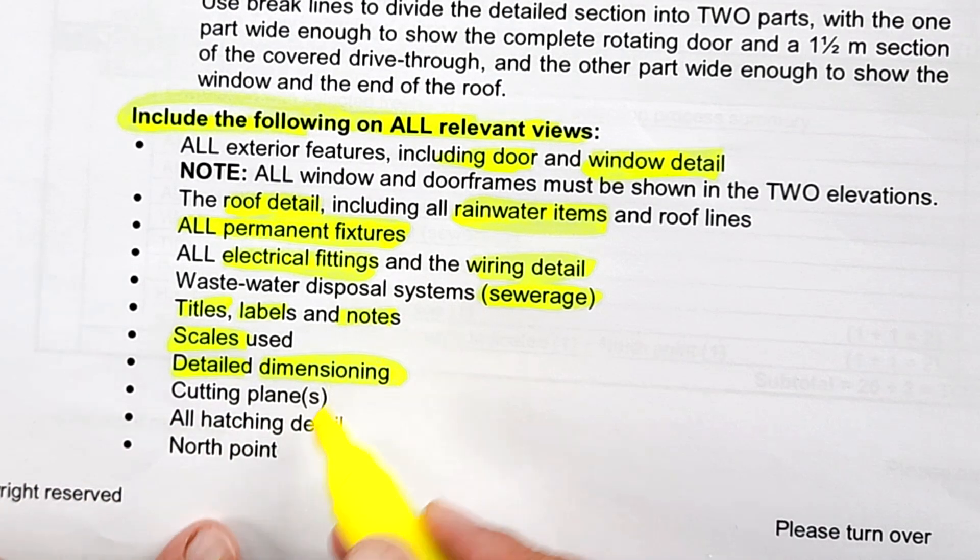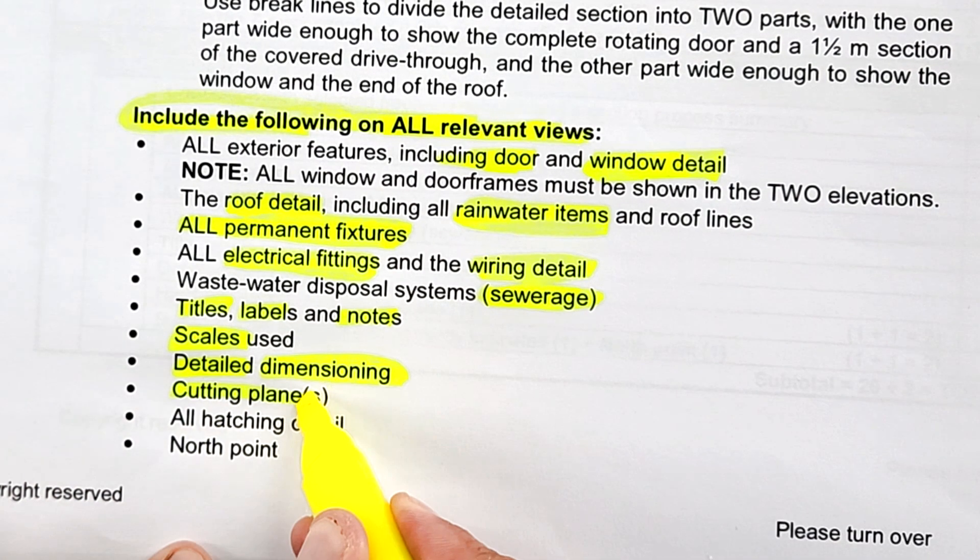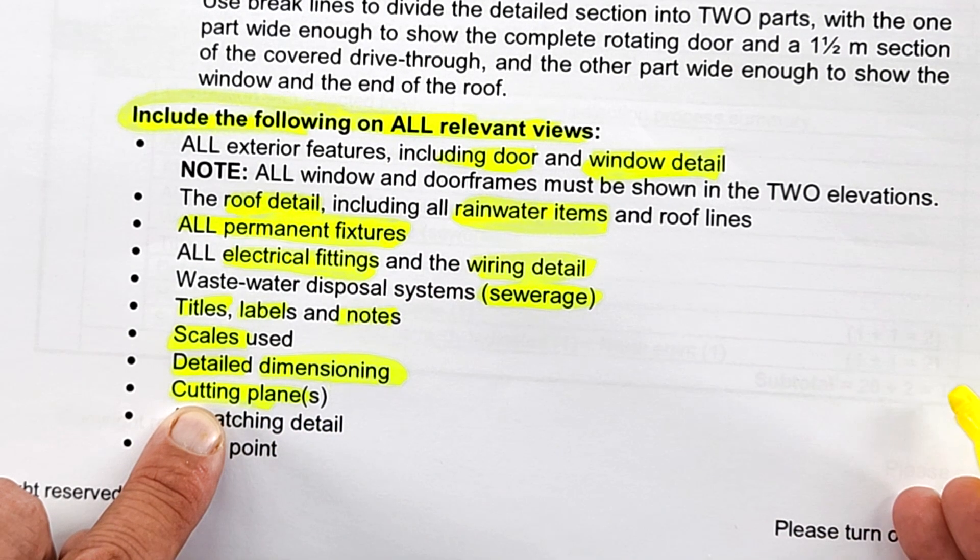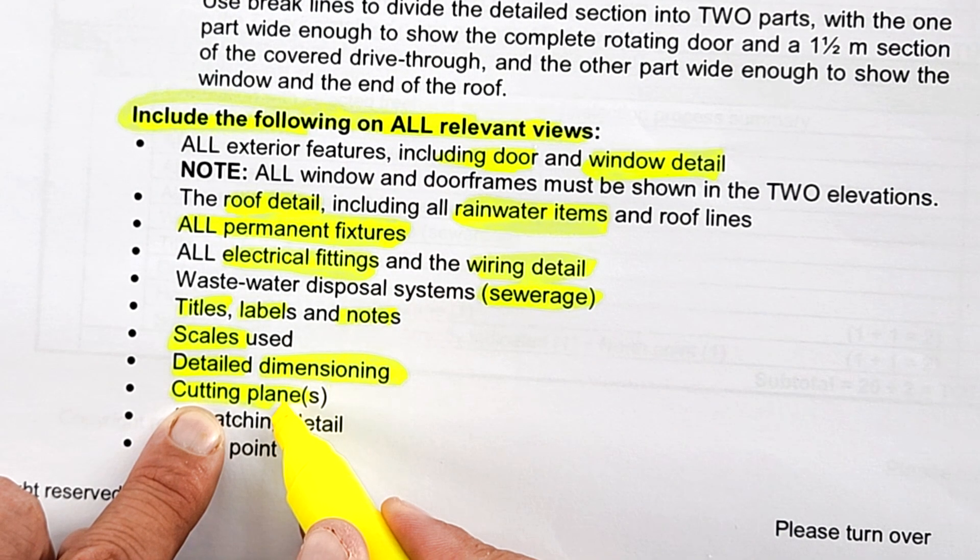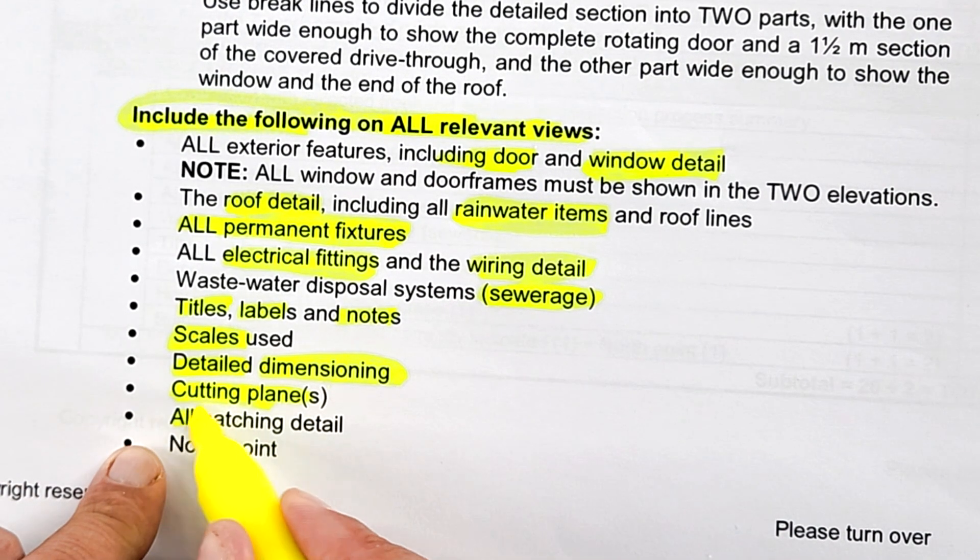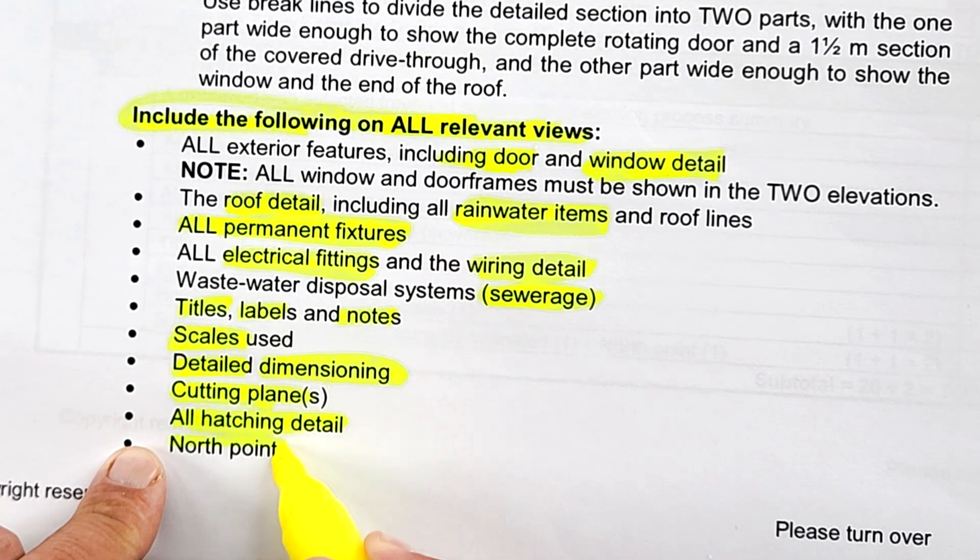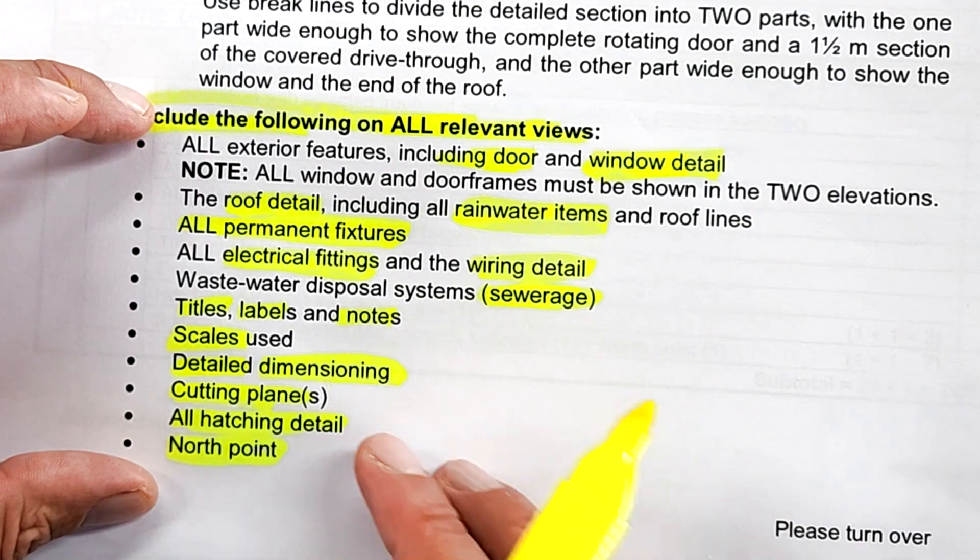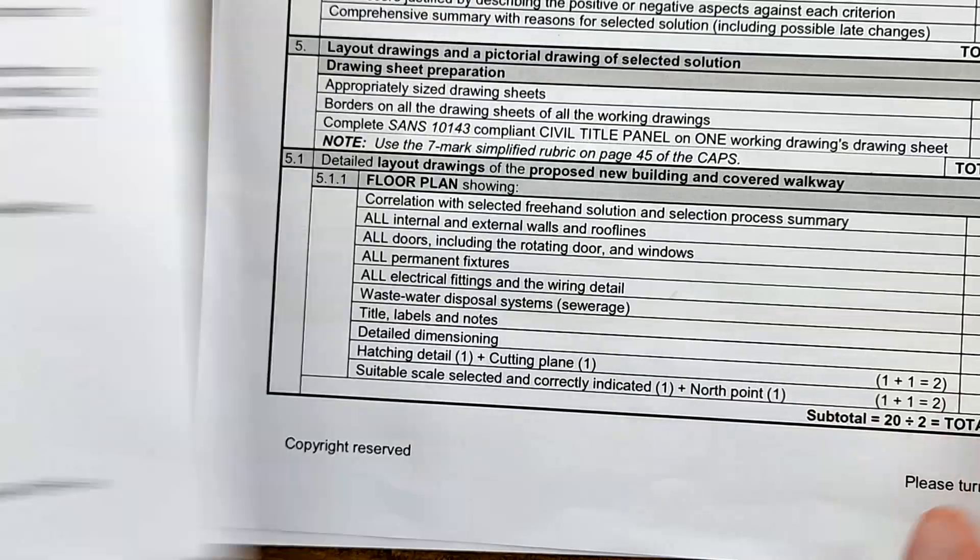There can't be any dimensions left out. You need to indicate your cutting plane because that will help you determine your section elevation. You'll have to have all the hatching detail plus your north point. Literally all of these are included in the floor plan.